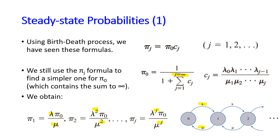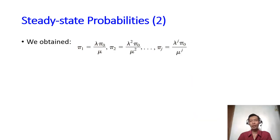The service rate is always mu regardless of the state, so C_j is simplified — any time we want to calculate π_j we just take lambda to the power of j divided by mu to the power of j. Having obtained π_1, π_2, and π_j, what we are going to do next is obtain a formula for π_0.